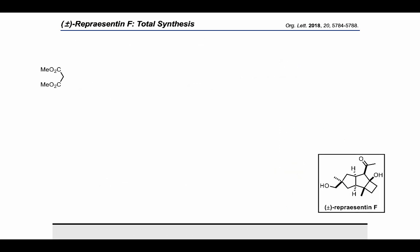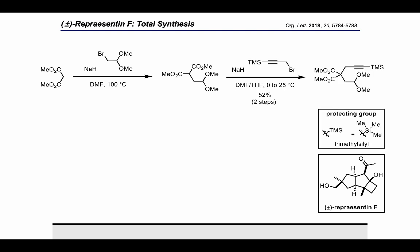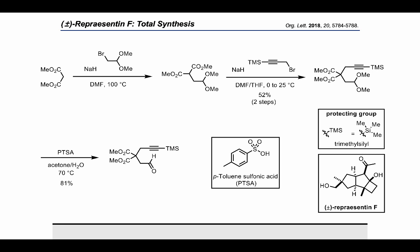The synthesis commences with the alkylation of dimethylmalonate with bromodimethoxyethane, using sodium hydride as base. The resulting product was further alkylated with trimethylsilyl-protected propargyl bromide to give the corresponding alkyne in moderate yield over two steps. Next, the acetal was hydrolyzed under acidic conditions using para-toluenesulfonic acid to give the corresponding aldehyde in 81% yield.